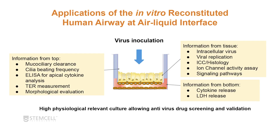If you're applying a virus to this culture system, there's a lot of information you can get from these cells. From the top or apical part of the cells you can look at mucociliary clearance, cilia beat frequency, do ELISAs for apical cytokine analysis, TER measurements, or morphological evaluation. From the tissue itself you can examine whether the virus has been internalized, if it's replicating, examine histological stains, look at ion channel activity, and different signaling pathways. From the basolateral side you can examine cytokine release into the media or LDH release as an indication of cell death. These cultures are highly physiologically relevant and allow for antiviral drug screening and validation.